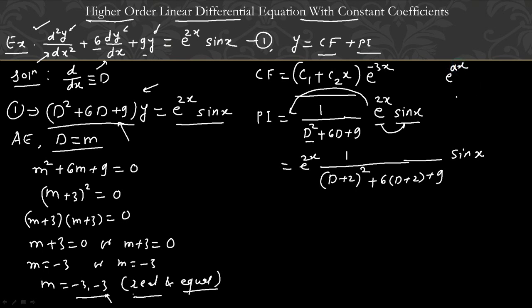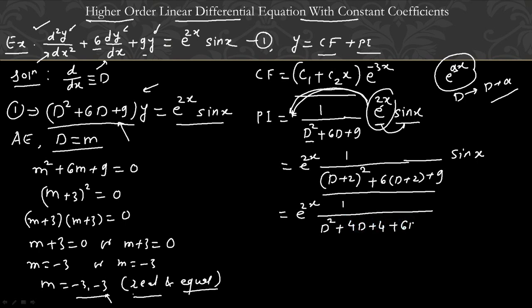When we have an exponential function, we replace D with D plus A. If we compare e to the power Ax with e to the power 2x, then A equals 2. So we replace D with D plus 2. We simplify this and then proceed to calculate PI. After simplification, applying (a plus b) whole square, we get D squared plus 4D plus 4, plus 6D which is 12D, plus 9. This simplifies to e to the power 2x times 1 upon (D squared plus 10D plus 25) into sin x. This is 25.